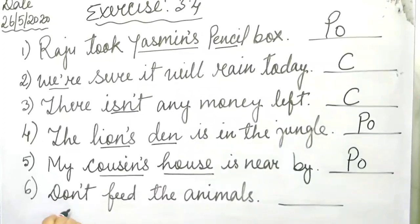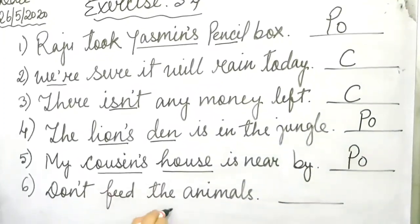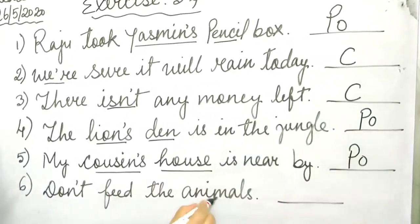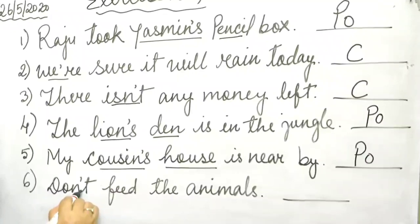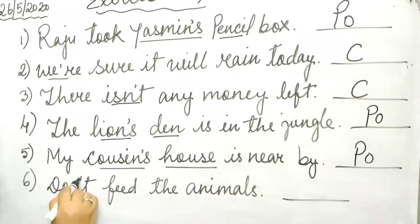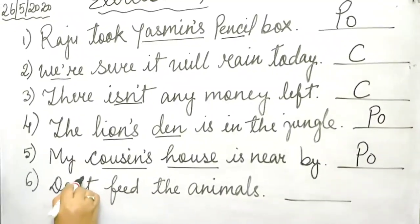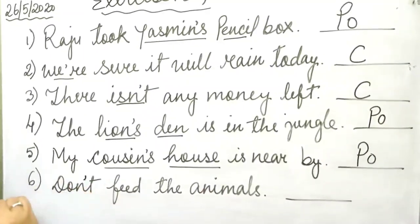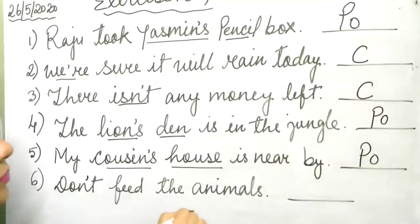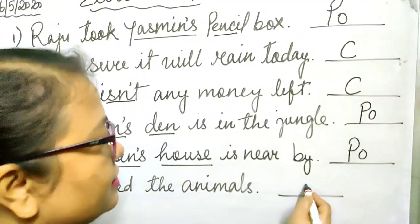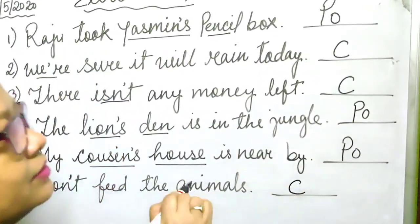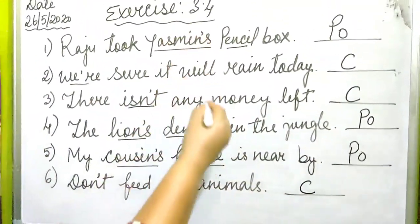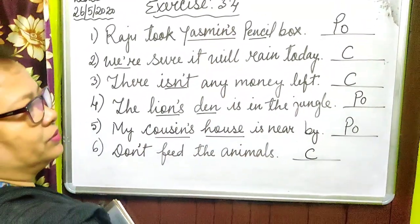Don't feed the animals. Again, the letter is removed and apostrophe is placed here. So what is this? Contraction — C. So do it in your workbook.